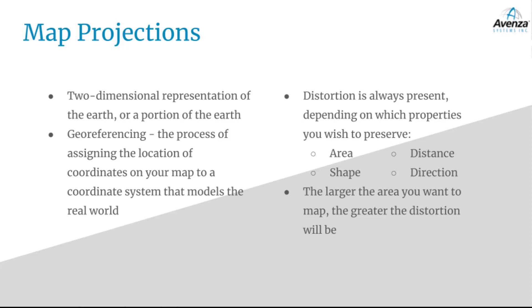One thing to remember about map projections is that distortion is always present, due to the curvature of the Earth. There are four main map projection properties you can preserve: area, shape, distance, and direction. Since it is impossible to preserve all four at once, the type of map projection you choose depends on which properties are most important for the usage of your map. The larger the area you want to map, the greater the distortion will be.